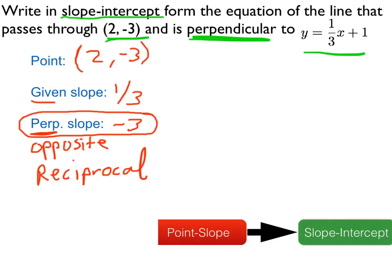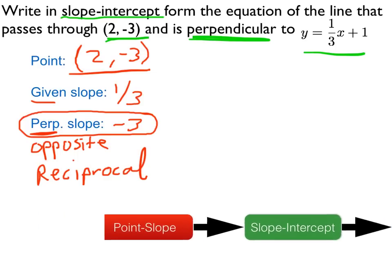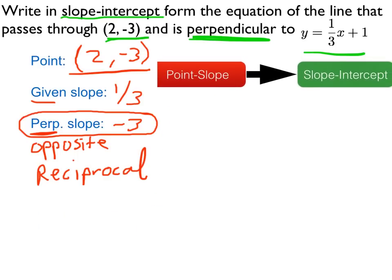So then we'll use that slope and the point 2, negative 3, and we'll stick that into point-slope form. So point-slope says y minus y1, and y1 is negative 3, so minus negative 3 is like plus 3 equals the slope of negative 3 times the quantity x minus 2.